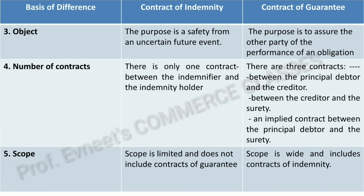Third — object: the purpose of a Contract of Indemnity is safety from an uncertain future event — protecting against something that may or may not happen. The purpose of a Contract of Guarantee is to assure the other party of the performance of an obligation — one person guarantees that another will fulfill their responsibility, and if they cannot, the guarantor will do so in their place. Fourth — number of contracts: a Contract of Indemnity involves only one contract between the indemnifier and indemnity holder. A Contract of Guarantee involves three contracts.